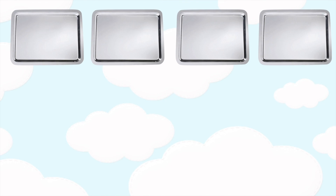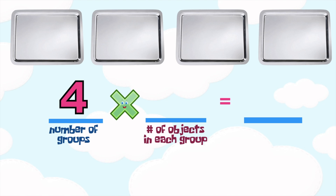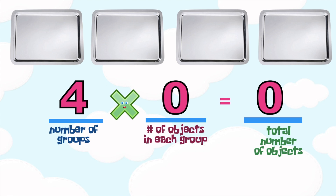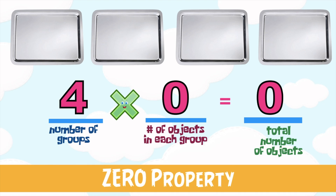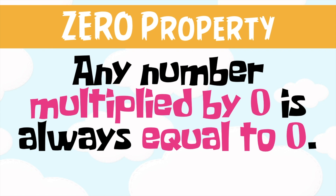Now let's look at the tray reserved for cookies. Suppose that at the moment I did not bake any cookies yet. How many cookies are there in all? We have 4 trays, and the number of objects in each group is 0. The total is 0. So 4 times 0 is equal to 0. This is what we call the zero property of multiplication — any number multiplied by 0 is always equal to 0.